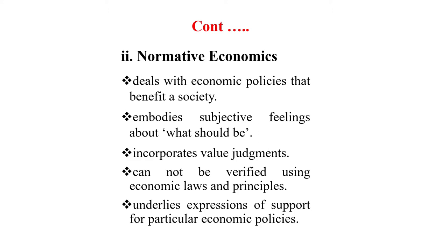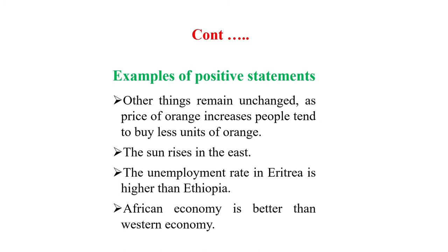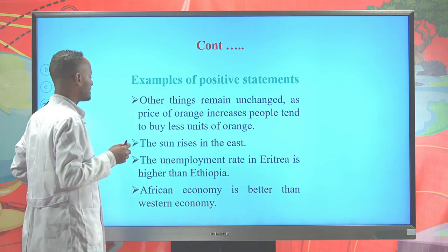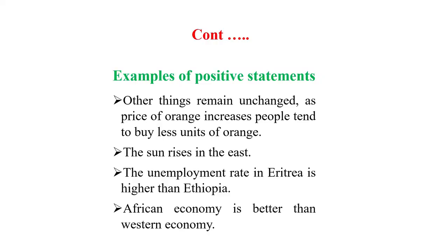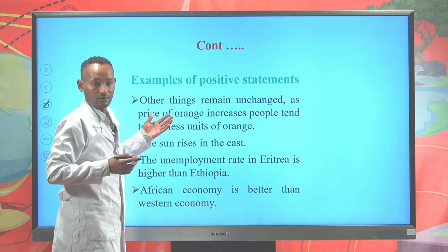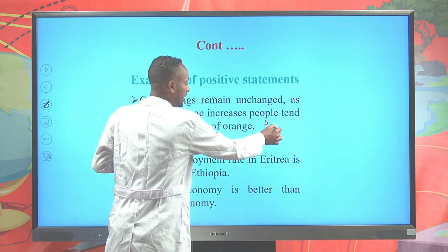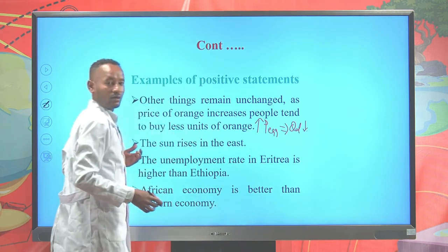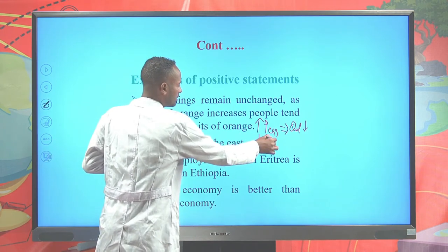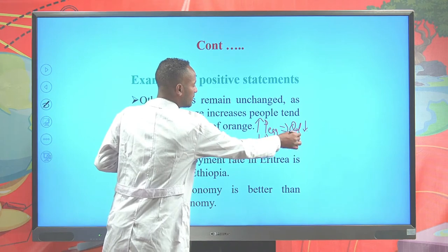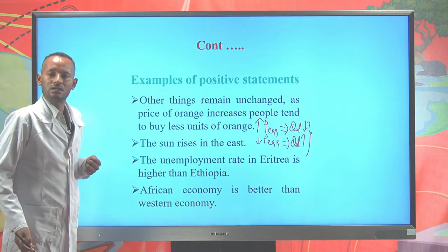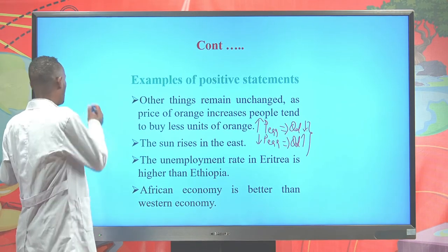For examples of positive economic statements: First, other things remain unchanged — as the price of orange increases, people tend to buy fewer units of orange. This is a positive economic statement because with a rise in price of a commodity, quantity demanded will decline, and with a fall in price, quantity demanded will increase. This statement is supported by the law of demand.